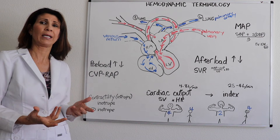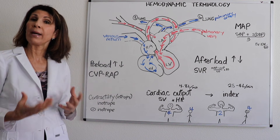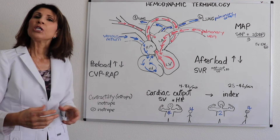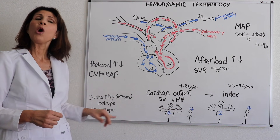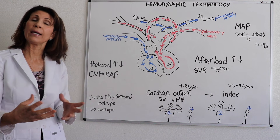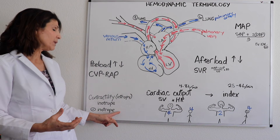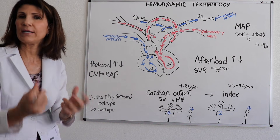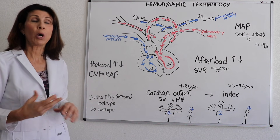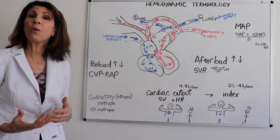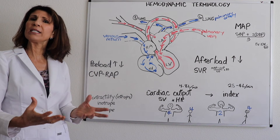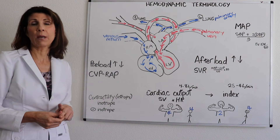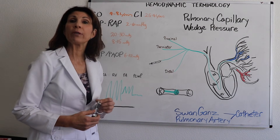Why would we ever want to decrease contractility? Consider a patient who's had a myocardial infarction — they have a tired myocardial muscle that needs to rest. By giving negative inotropes, we preserve energy and decrease myocardial oxygen consumption. The drugs that do this cardioprotective task are the beta blockers. Post-MI, we give patients beta blockers not just for blood pressure, but because they reduce contractility and preserve myocardial oxygen consumption.